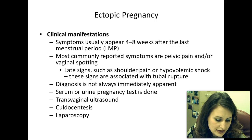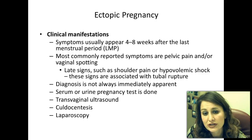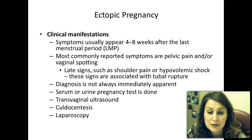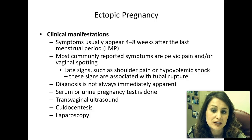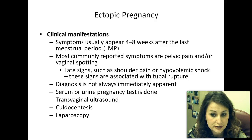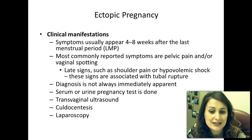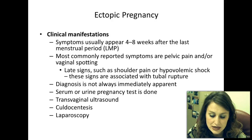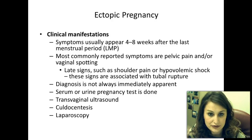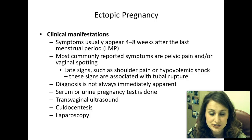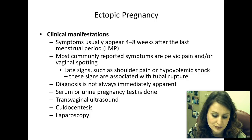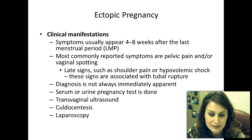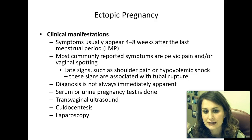Clinical manifestations: symptoms usually appear between four and eight weeks after the last menstrual period. The most commonly reported symptoms are pelvic pain and/or vaginal spotting. Late signs such as shoulder pain or referred pain and hypovolemic shock are associated with tubal rupture. Signs of shock include rapid thready pulse, increased respirations, shallow irregular breathing, falling blood pressure, falling urine output, and pale, cold, clammy skin.